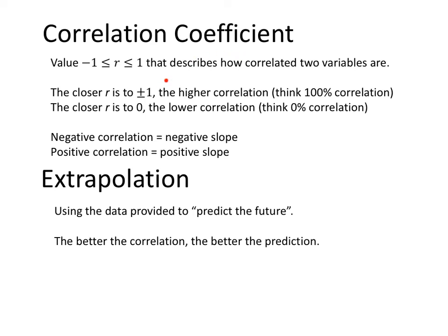If you have a good correlation coefficient, we can use that model to extrapolate data. Extrapolation means predicting the future - if you're given certain data, predicting what will happen 10 years from now if the trend continues. The better the correlation, the better the prediction.